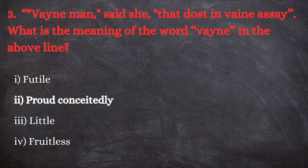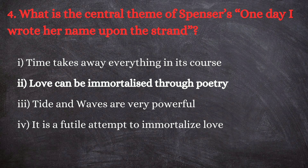Here the lady love is rebuking the lover for making a vain attempt to immortalize the name of the beloved by writing it on the seashore. Question number four: what is the central theme of Spenser's 'One day I wrote her name upon the strand'? The options are: first, time takes away everything in its course; second, love can be immortalized through poetry.